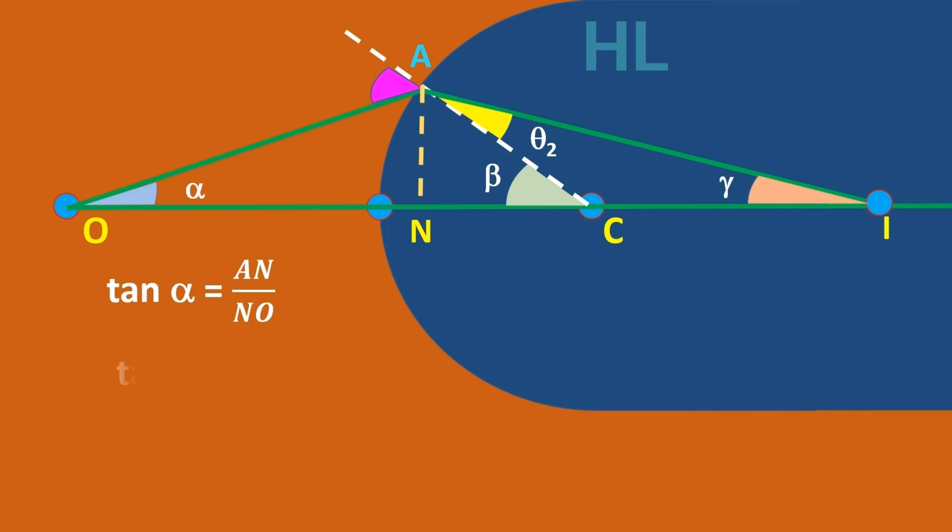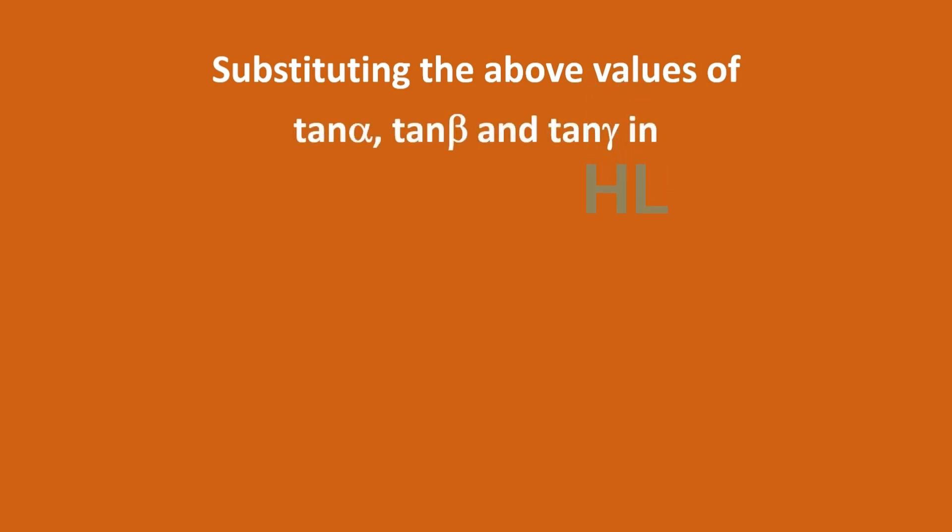Here using right angle triangles, we can write tan alpha equal to AN by NO, tan beta equal to AN by NC, and tan gamma equal to AN by NI. By substituting the above values of tan alpha, tan beta and tan gamma in equation number 2.